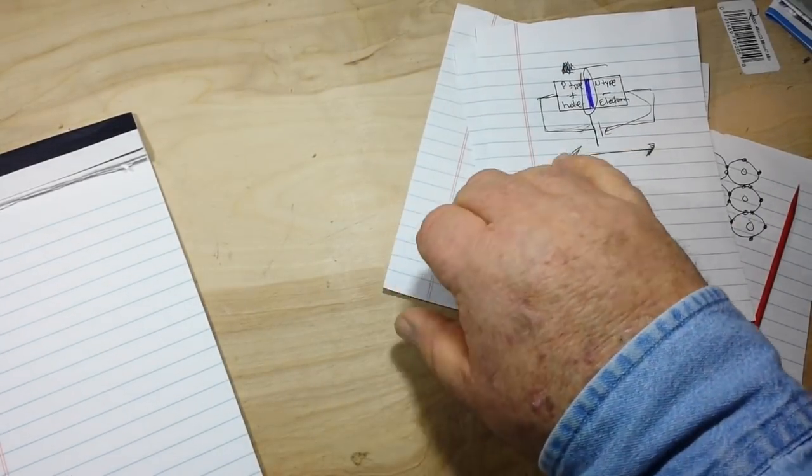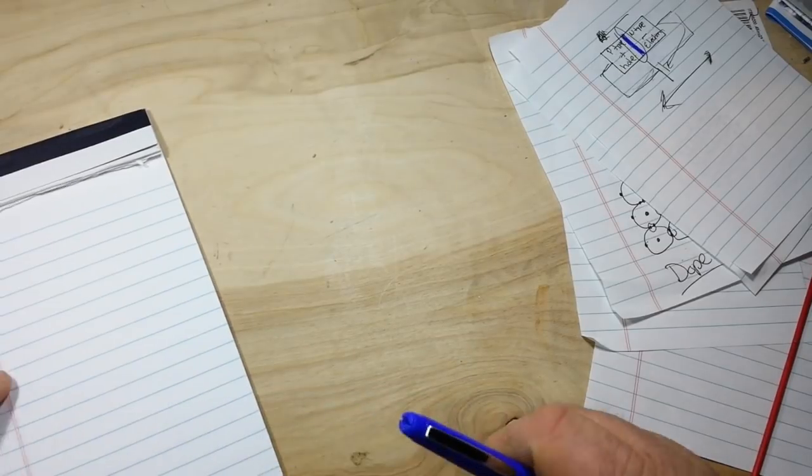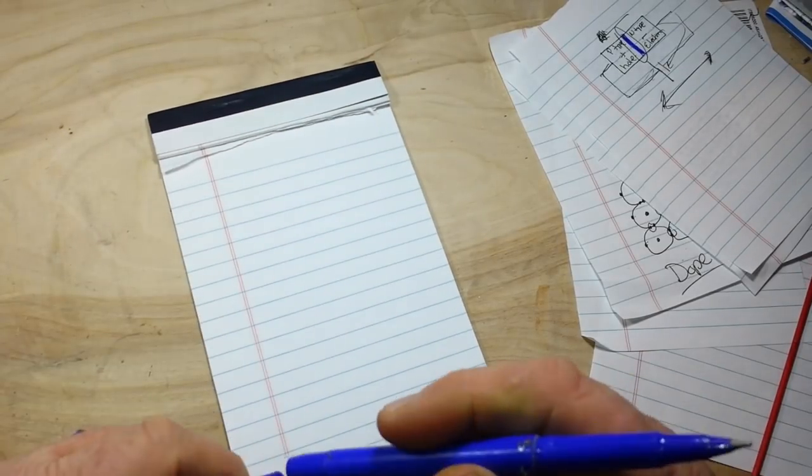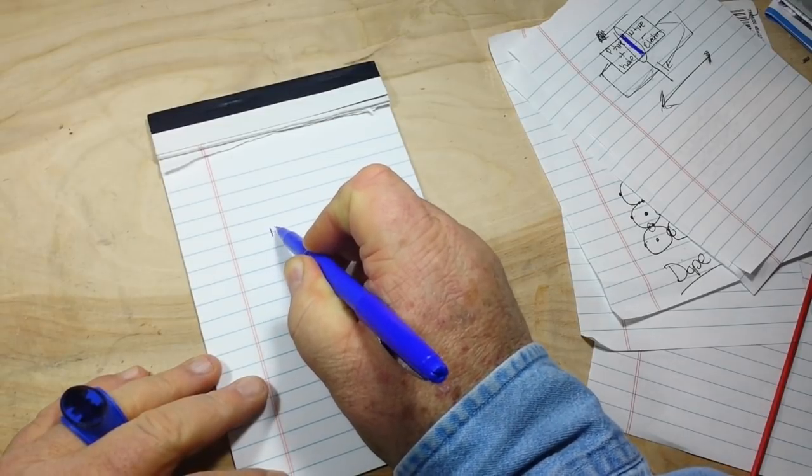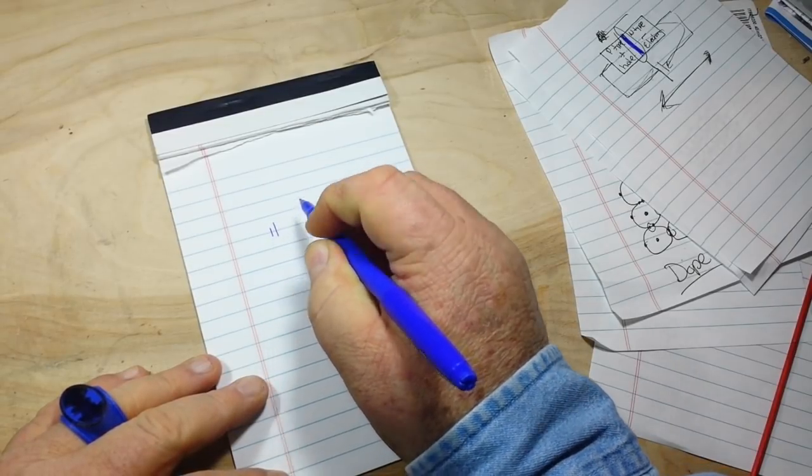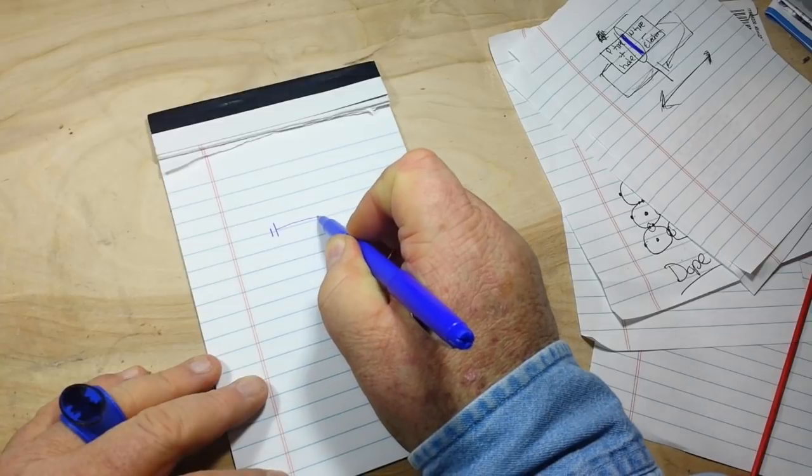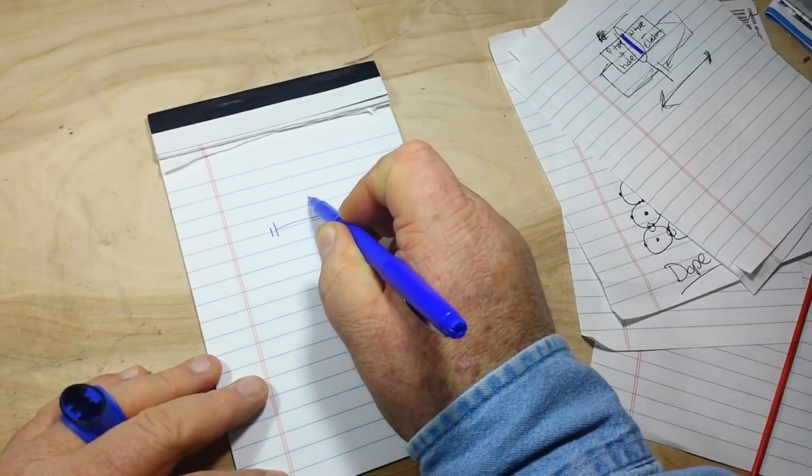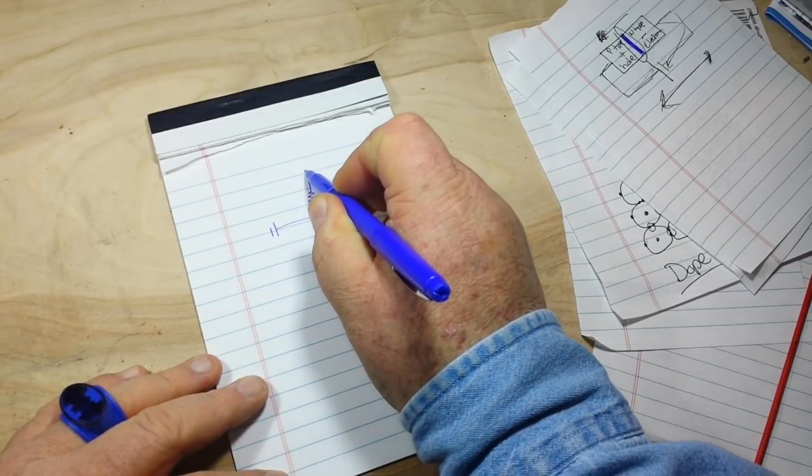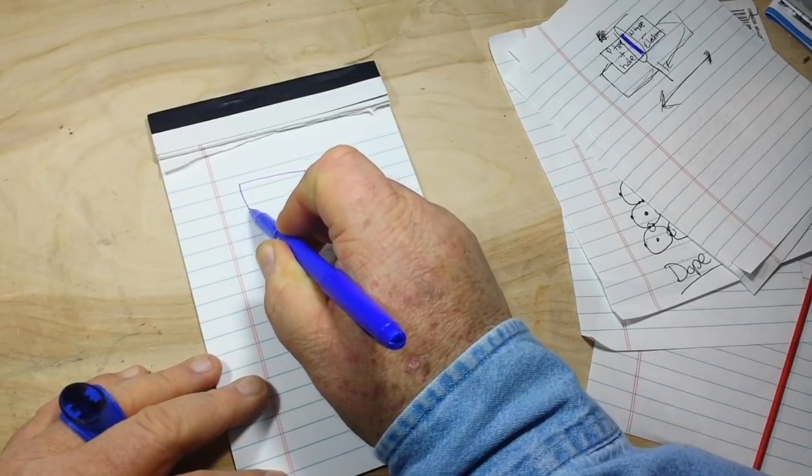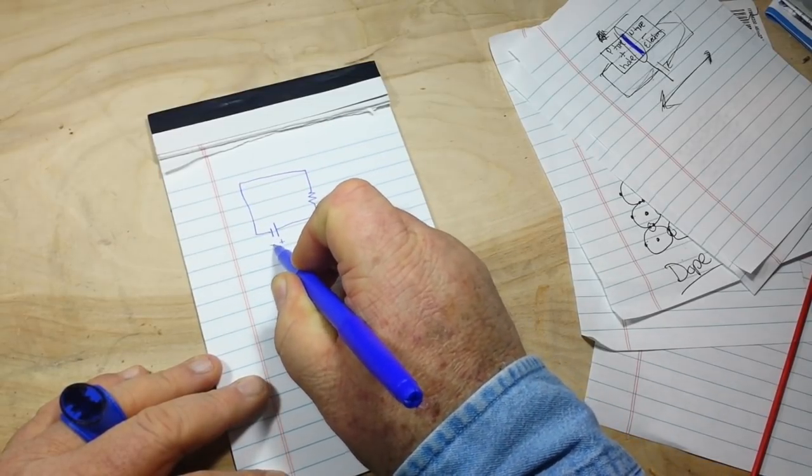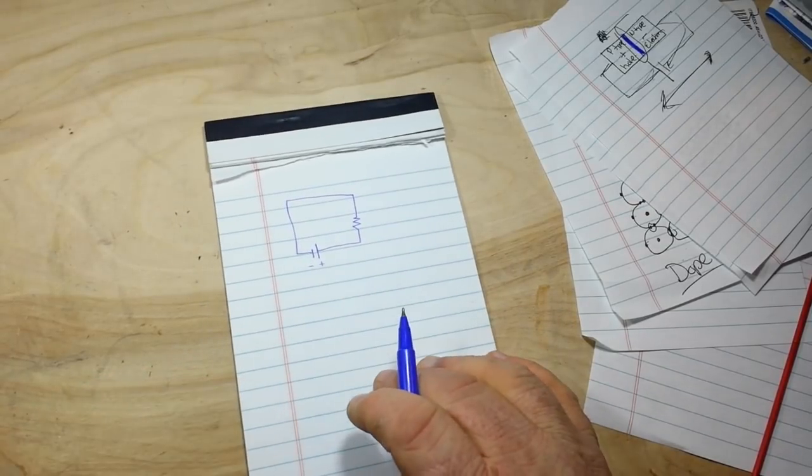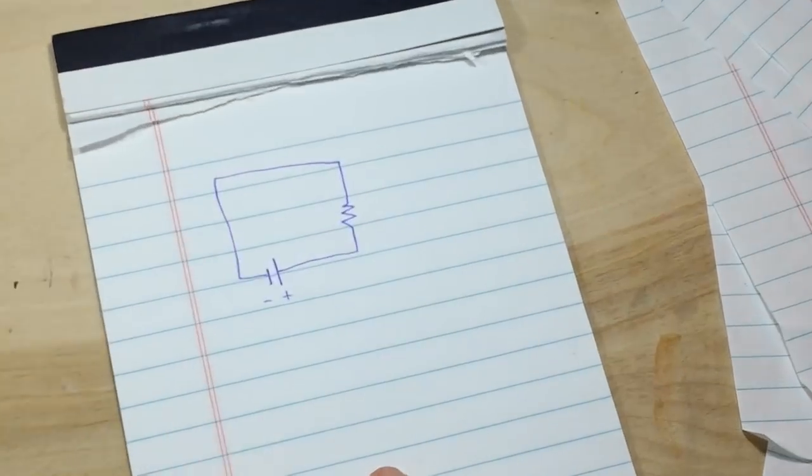So here is our basic circuit. Let's start off with a battery, and from the battery there's a resistor. This is the positive side of the battery, this is the negative side of the battery. Let me zoom in here.